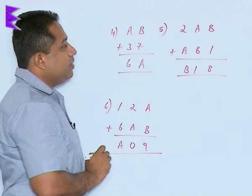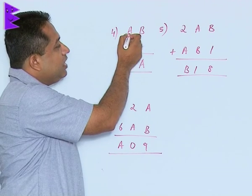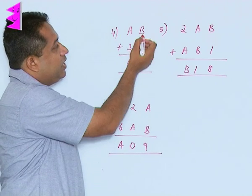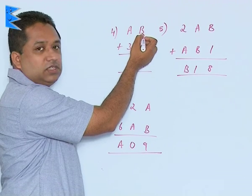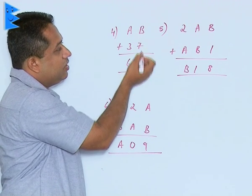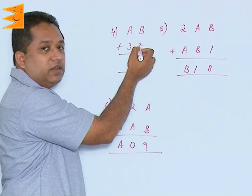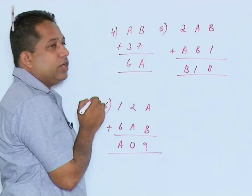So the value of A can be 3. If I am taking 3 here, 3 plus 3 is 6, but if I am taking here 3, that means this value has to be 6, because if I want 3 here the value of B has to be 6. 6 plus 7 is 13. So 3 and 1 will get carried over.